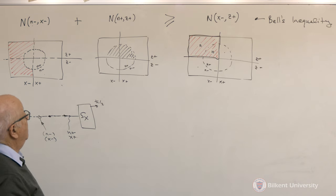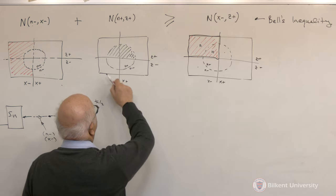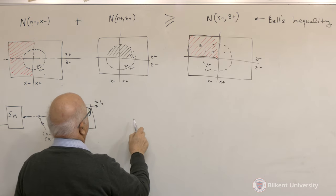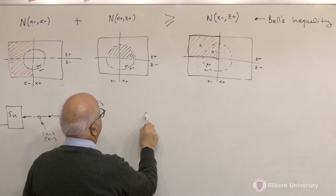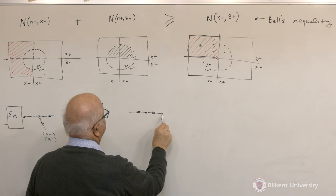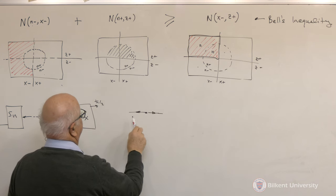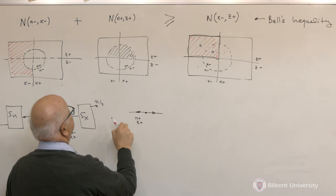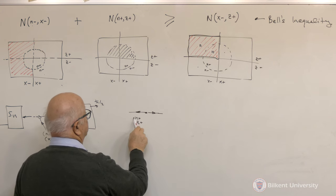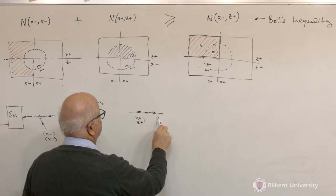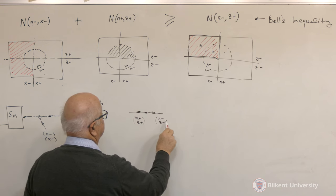I'm going to have a similar object here. So these are n-plus, z-plus. Again, just looking at this experiment, these are the two particles that are generated. I am interested in n-plus, z-plus. So I'm going to go through this in detail so that I don't make mistakes. This one going towards the right is n-minus, z-minus.